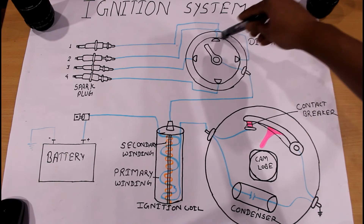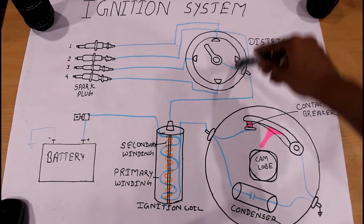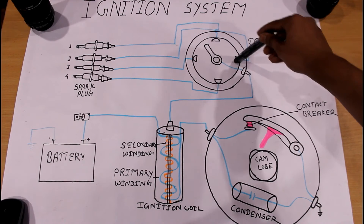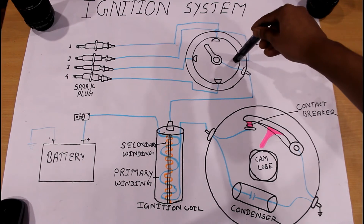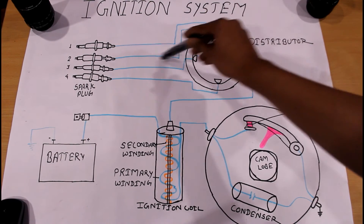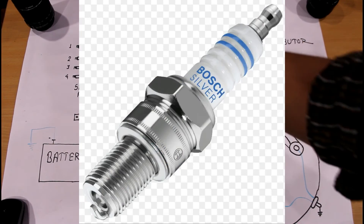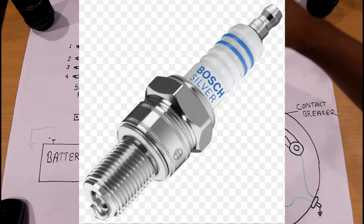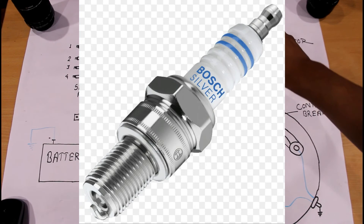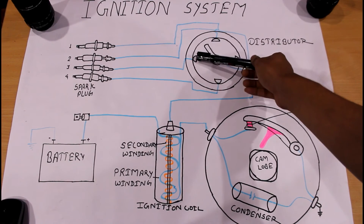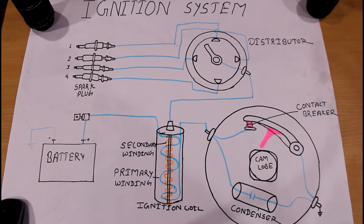As the rotor continues to rotate and reaches the next distributor point, the voltage jumps again to that point and travels through the pipeline to the corresponding spark plug. This happens for each distributor point in sequence. Finally, combustion takes place inside each engine cylinder, power is generated, and our vehicle moves.